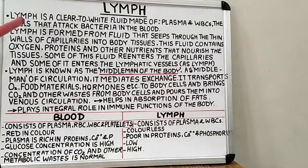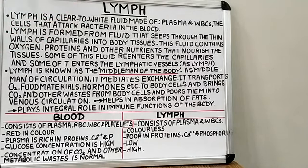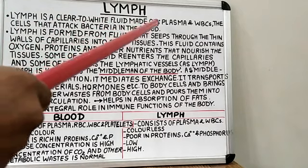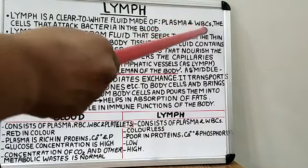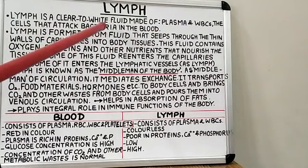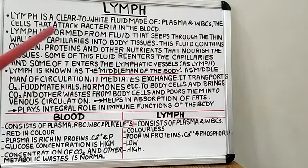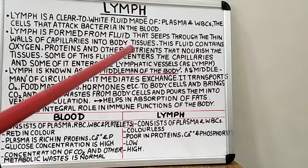Hello students, in this lecture we will study about lymph. Lymph is a type of fluid connective tissue other than blood and is also a medium of transport. Lymph is a clear to white fluid made of plasma and WBCs, particularly lymphocytes, the cells that attack bacteria in the blood. Lymph is formed from fluid that sieves through the thin walls of capillaries into body tissues.